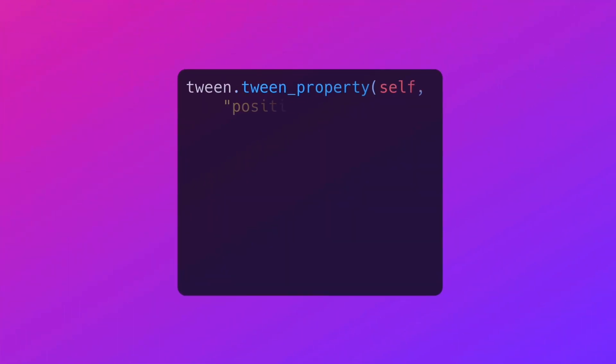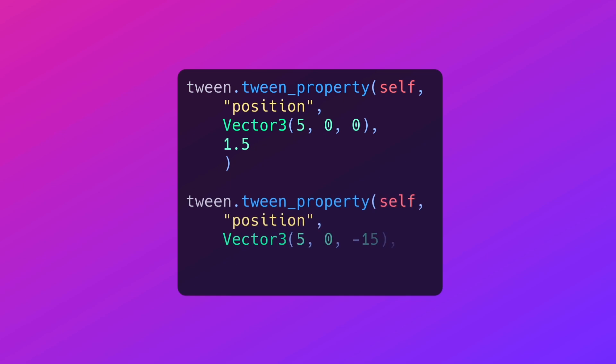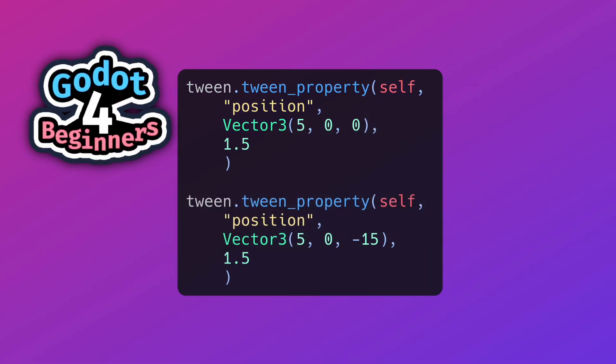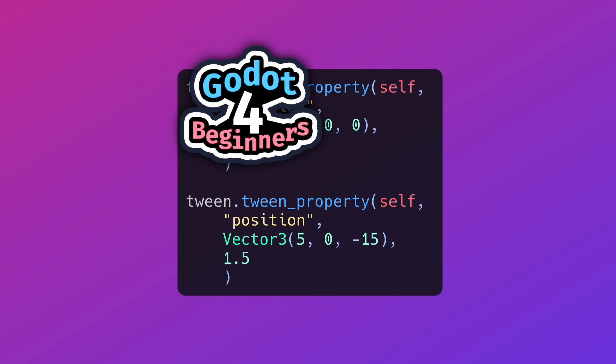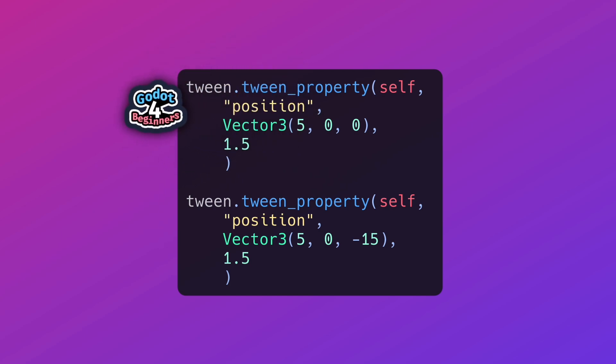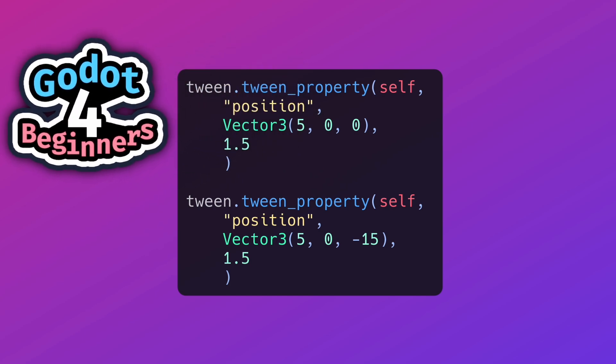If you want to queue a series of animations, that all happens implicitly. Every time you call the tween_property function, it adds that tweening process onto the end of a queue. So say I want to tween my object so it moves to the right, I can then tween it so it moves up, and then tween it so it goes back to the starting point — and those will happen one after the other.